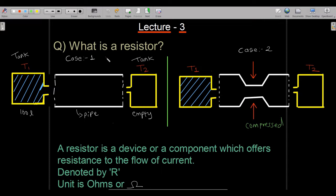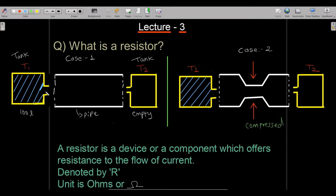Before studying the resistor, I would like to explain the cases which are present on the screen. As you can see, this is Tank 1, represented as T1, and this is Tank 2, represented as T2, and in between both of them there is a pipe. Tank T1 is completely filled with 100 liters of water and Tank 2 is completely empty. I am opening the tap so that the water from T1 will move towards T2.